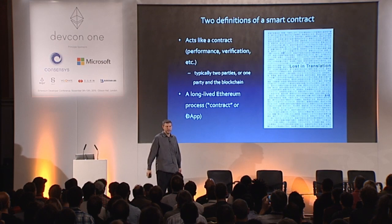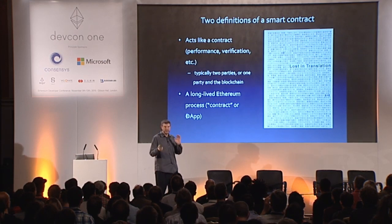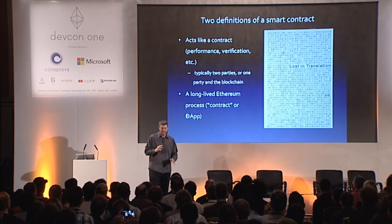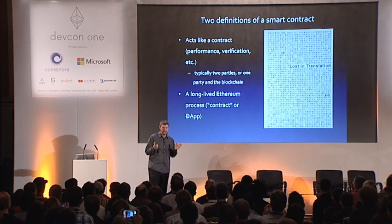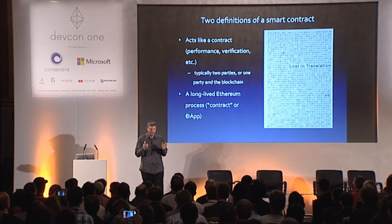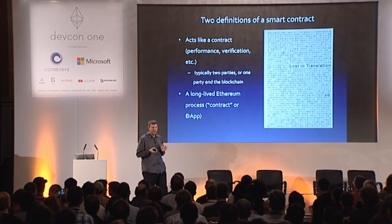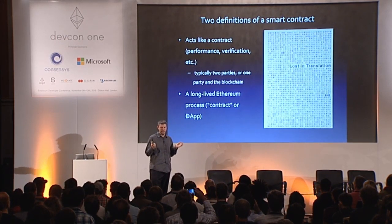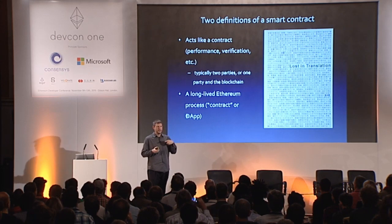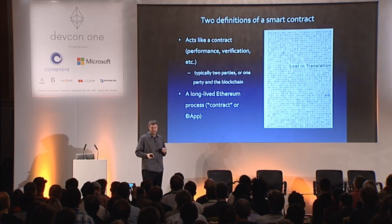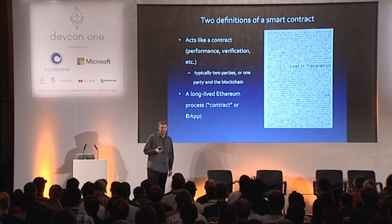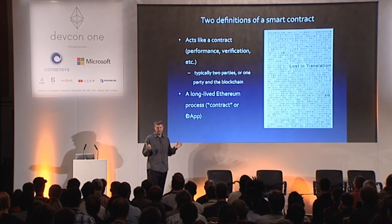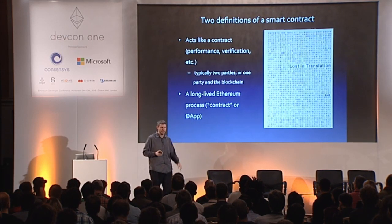To get to smart contracts: there are two ways people talk about smart contracts, and both are valid. The way Ethereum talks about it is sometimes as a synonym for a long-lived process, a contract or distributed app. The original and still quite meaningful definition of smart contract is that it acts like a contract — there's automated performance, there's verification; it's doing the function of a contract. Typically in a smart contract of that kind, you have two parties, or you have one party and the blockchain.